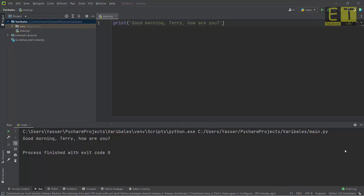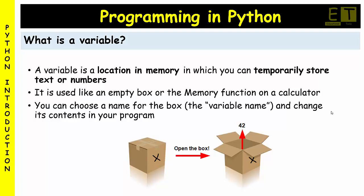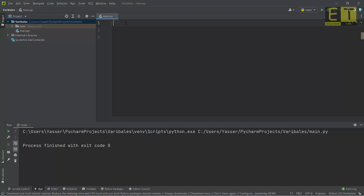Let's find out what a variable is and what part it can play in our programming. A variable is nothing more than an address location in memory. It can be used to store data such as a number or some text. You could think of it as a box. In this example, the data being stored in the variable is an integer with a value of 42, and the variable has a name X.